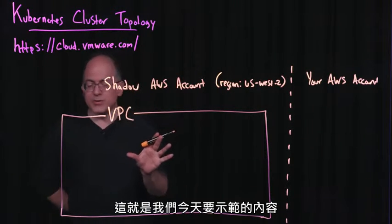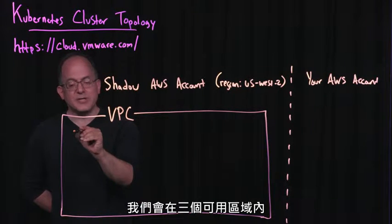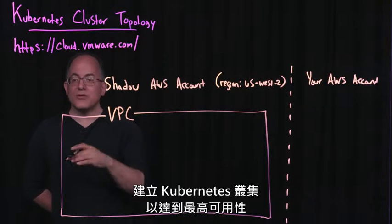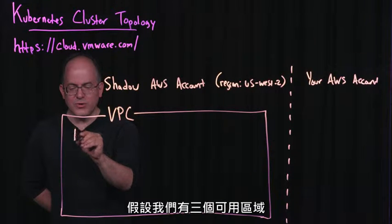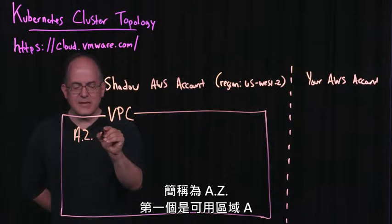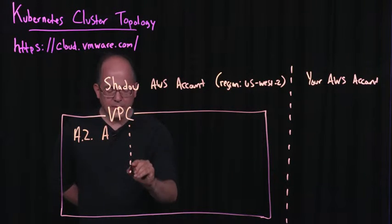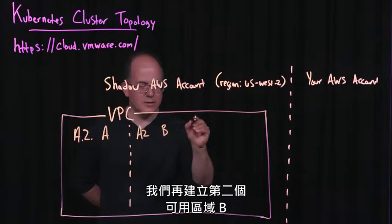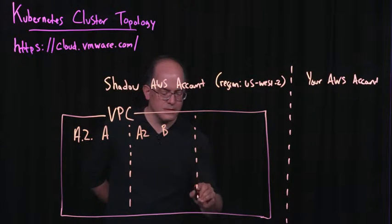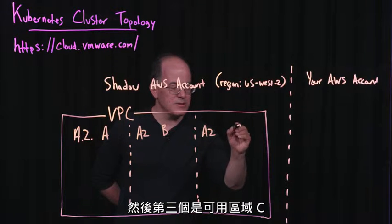And that's exactly what we're going to do here. We are going to create the Kubernetes cluster in three availability zones for maximum availability. So I'm going to assume we have three zones — I'm going to abbreviate it AZ, and then zone A, availability zone B, and a third zone, availability zone C.